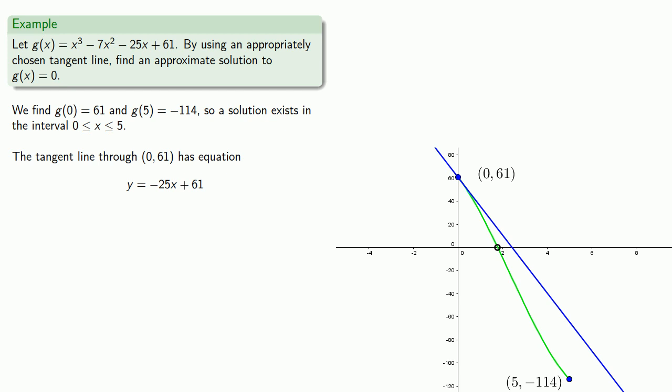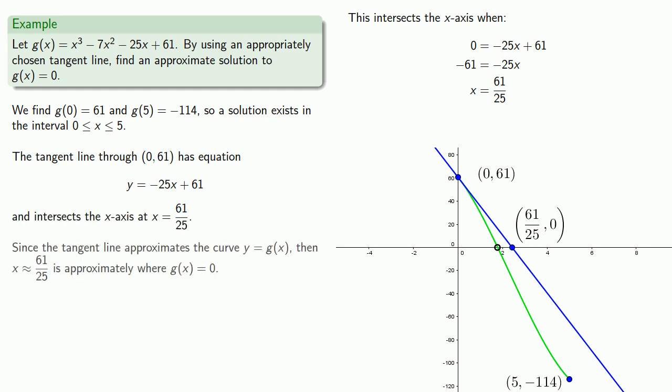Now the tangent line will intersect the x-axis when y is equal to 0. And so that tells us that x is 61/25. And since the tangent line approximates the curve, that says that x close to 61/25 is approximately where g(x) = 0.